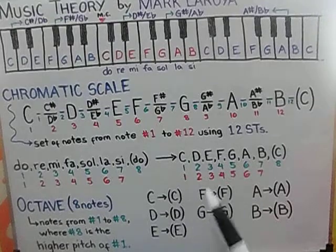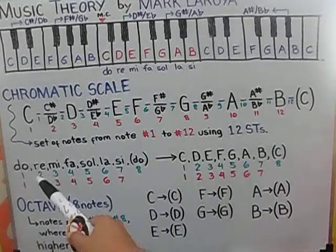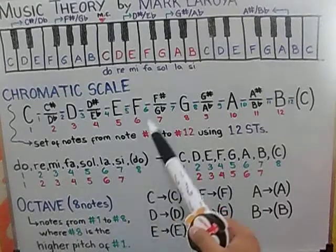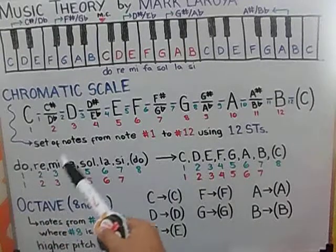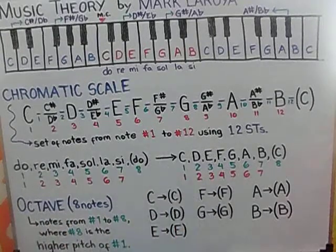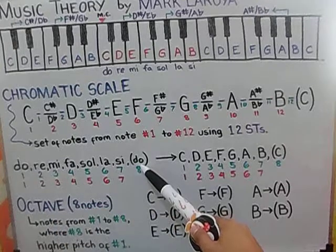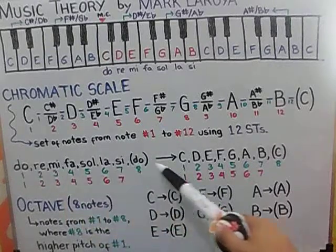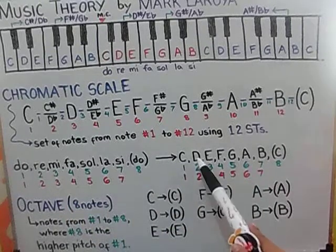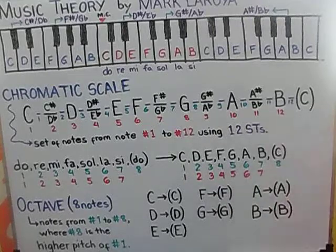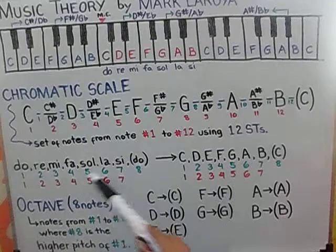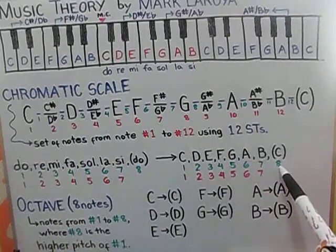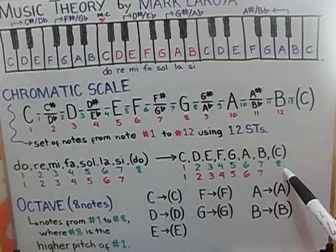Now, we go down to the familiar tune. C, D, E, F, G, A, B, and then again, C. So, if we notice, there are 8 notes from DO to DO or C to C. We have 8 notes. These green numbers here below them.